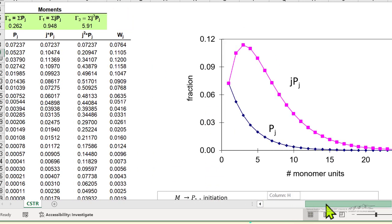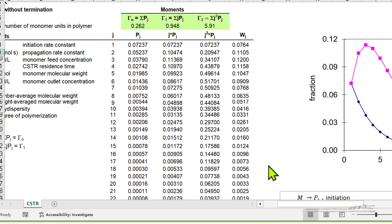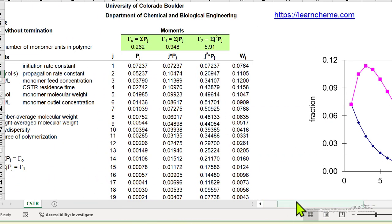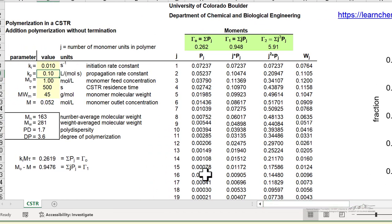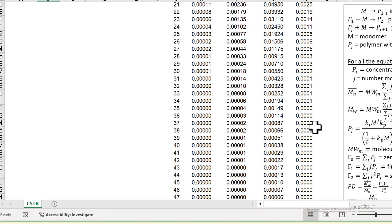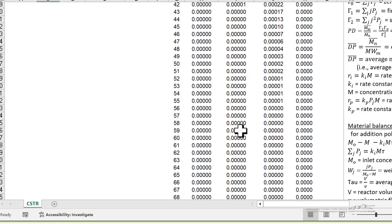When I change it back, the spreadsheet is set up to have higher number and weight average molecular weights, so we have more values than we're plotting here.